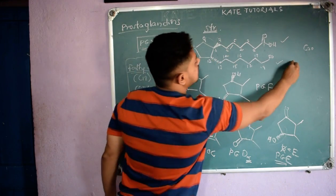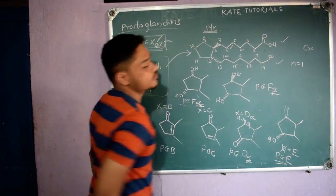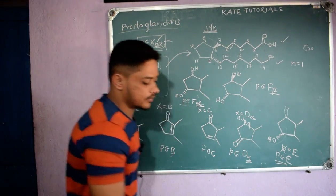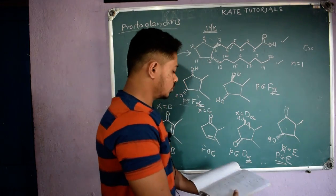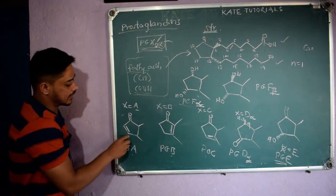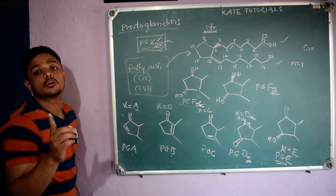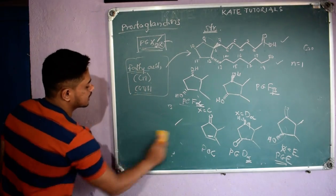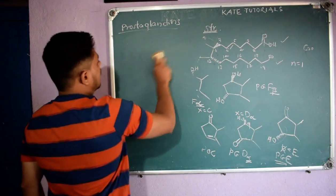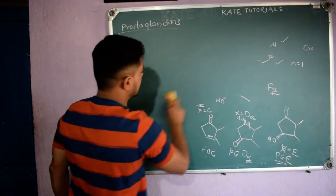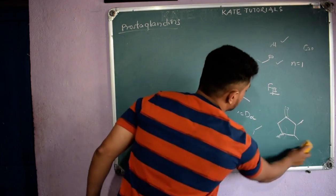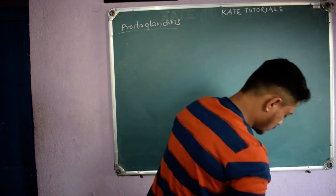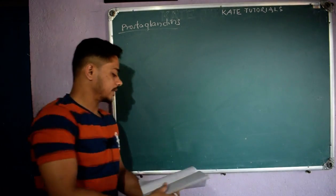N is the number of pi bonds in the side chains. If there is one pi bond in the side chain, N equals 1. If there are two pi bonds across the side chains, N equals 2. Note: a pi bond in the cyclopentane ring itself is not counted toward N.